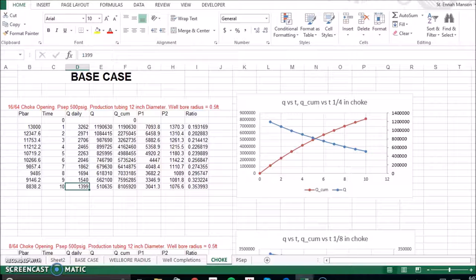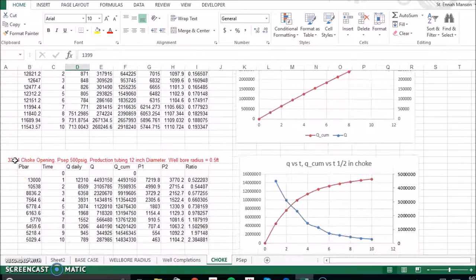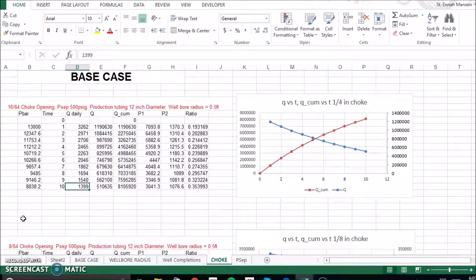Hello, I'm going to talk to you about how the choke opening can affect the flow and the production. We use three different choke opening sizes. We use one fourth of an inch, one eighth of an inch, and we also use one half of an inch. When deciding what our base case should be, we kept in the back of our minds that we wanted to maximize production and we also wanted to have critical flow for all 10 years.